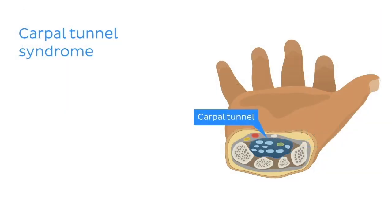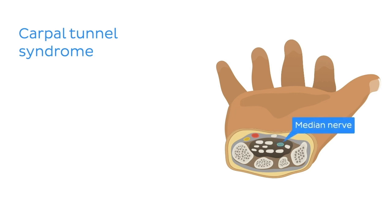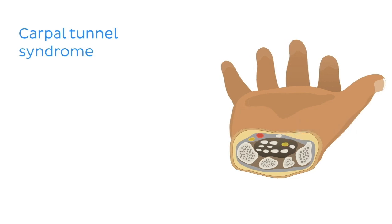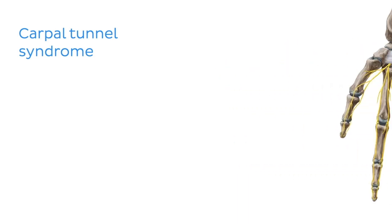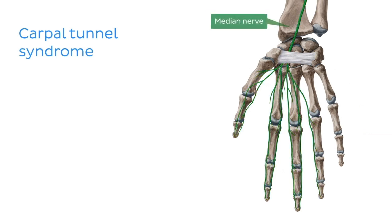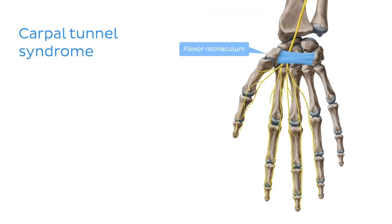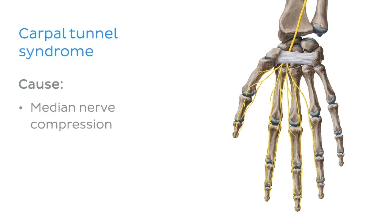The carpal tunnel itself is a narrow corridor in the anterior region of the wrist that allows for passage of muscle tendons and pivotal neurovasculature, including the median nerve. Compression of the median nerve by the overlying flexor retinaculum is the cause of carpal tunnel syndrome.